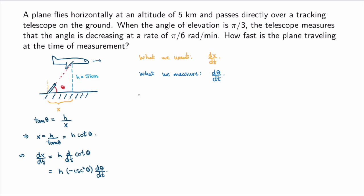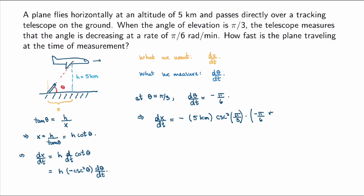Now I evaluate this relation for the particular angle given in the problem. I'm interested in θ = π/3, and I know that at this angle the angle is decreasing at a rate of π/6, so dθ/dt = −π/6 radians per minute. Substituting in, the rate of change of position is: negative h, which is 5 km, times csc²(π/3), times dθ/dt which is −π/6 radians per minute.